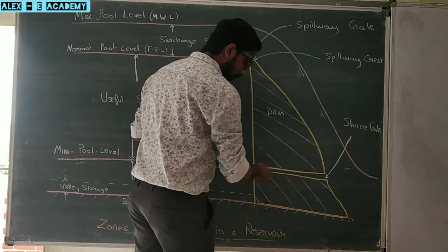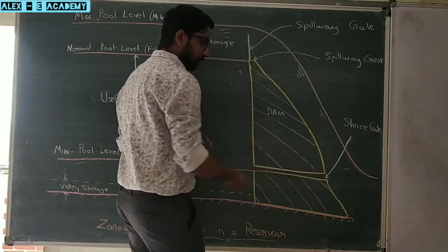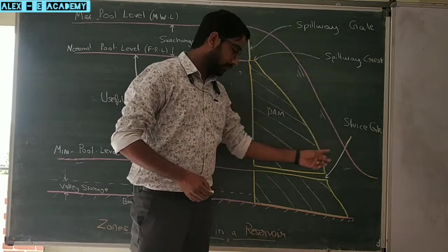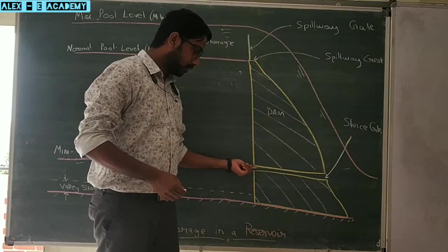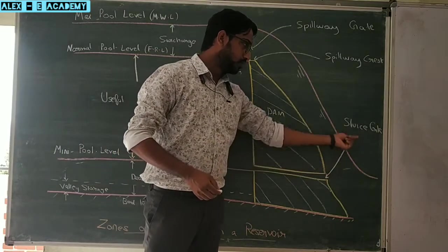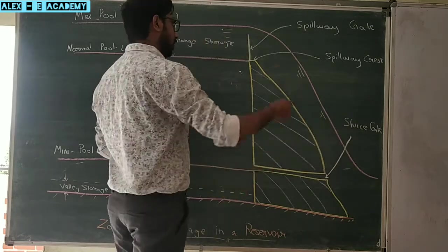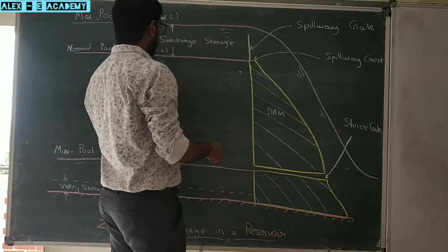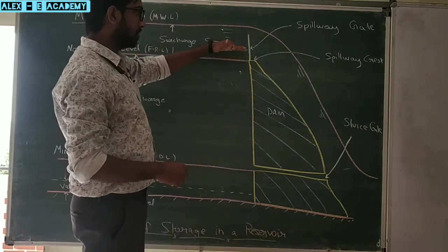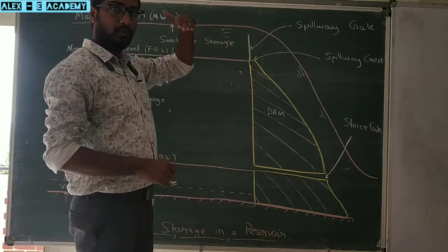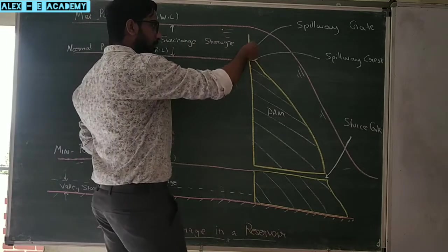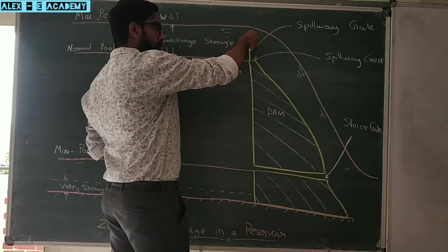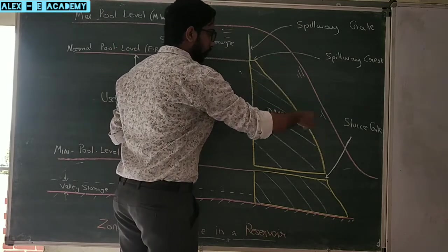This is a pipe. This is the sluice gate. That is a metallic structure. That is the dam — you need to be able to follow the movement.